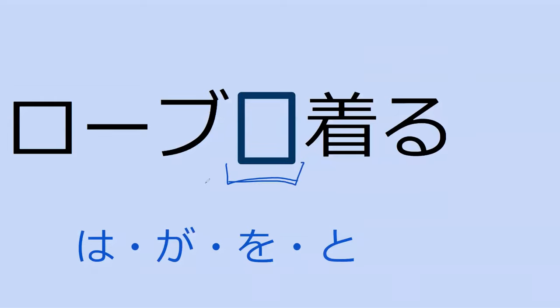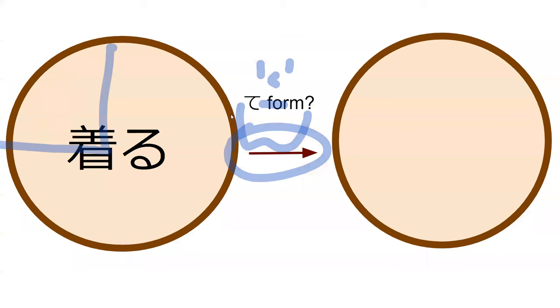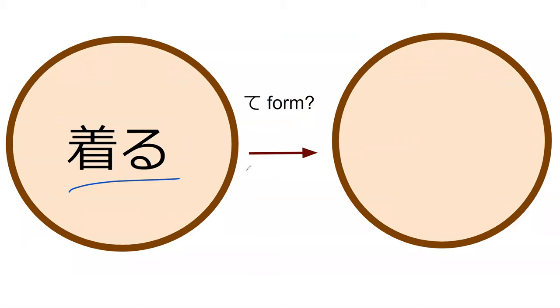What particle do you think goes here with the word 'robe'? を. Perfect — を because you're making a decision to wear the clothes, there's intent there. And 老人 means 'elder' — super common word in Japanese. Do you know what the て-form of 着る is? きて. Yeah, きて.